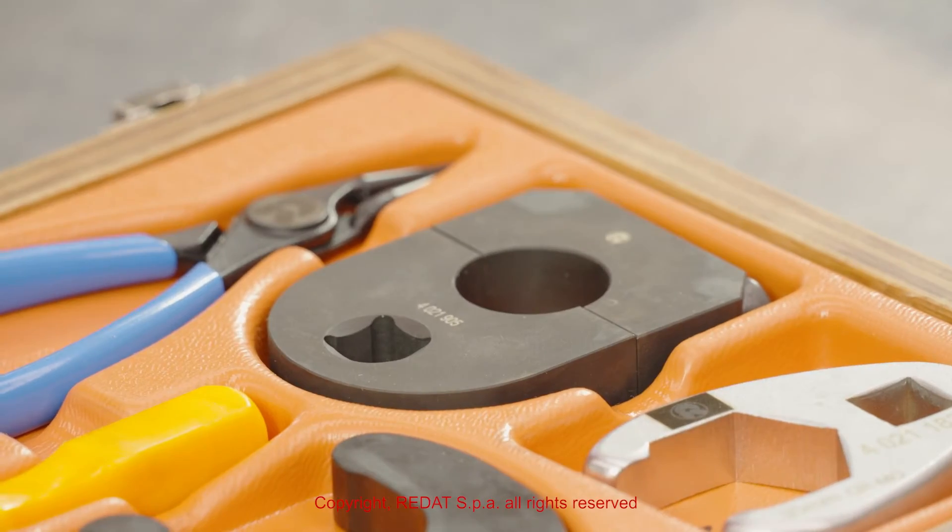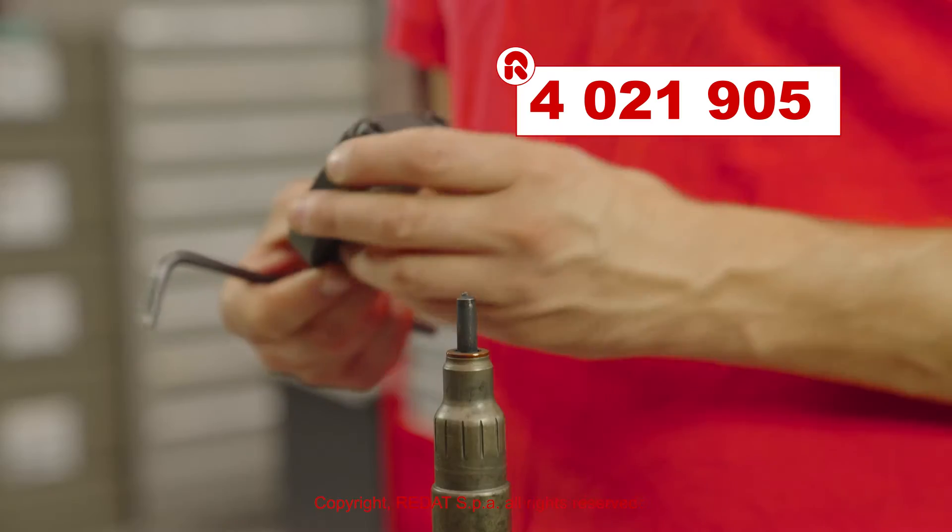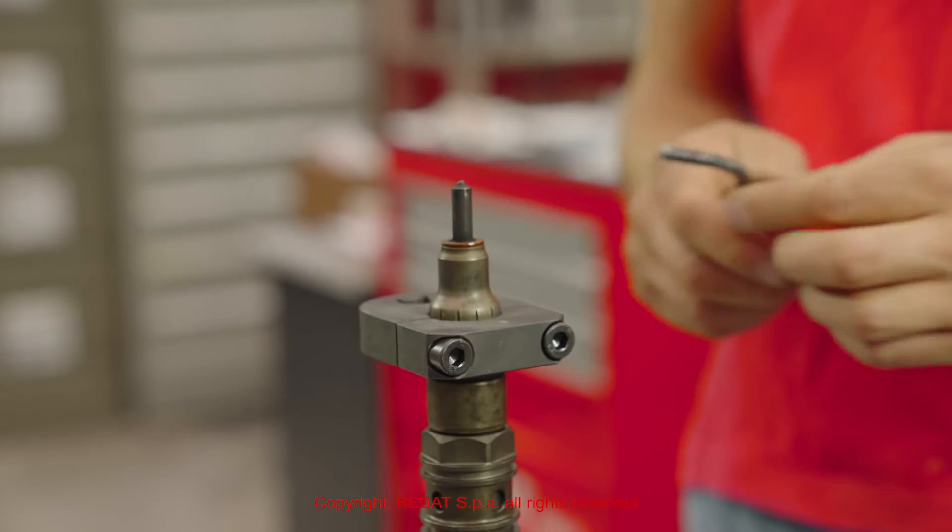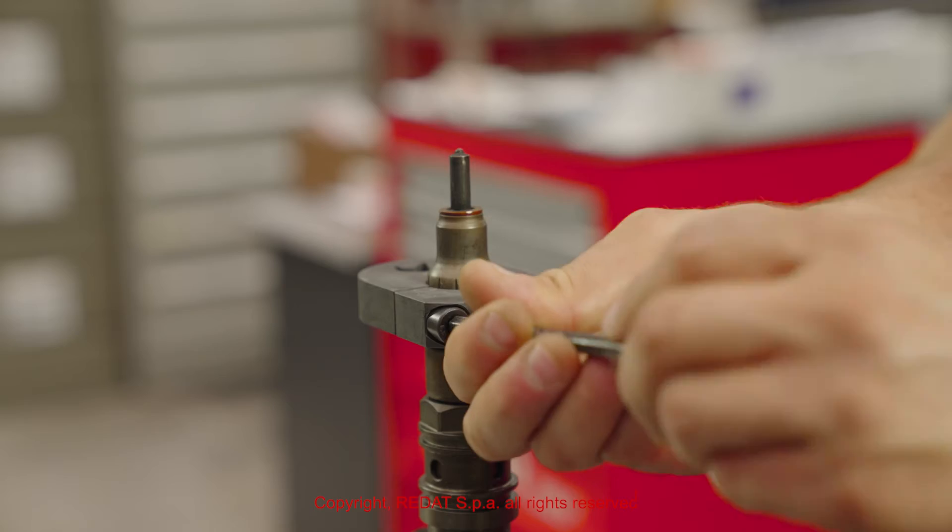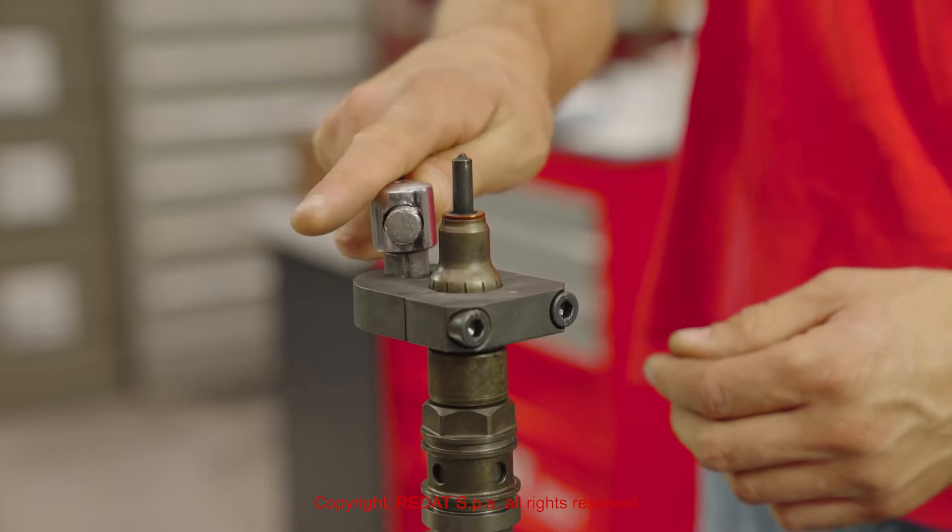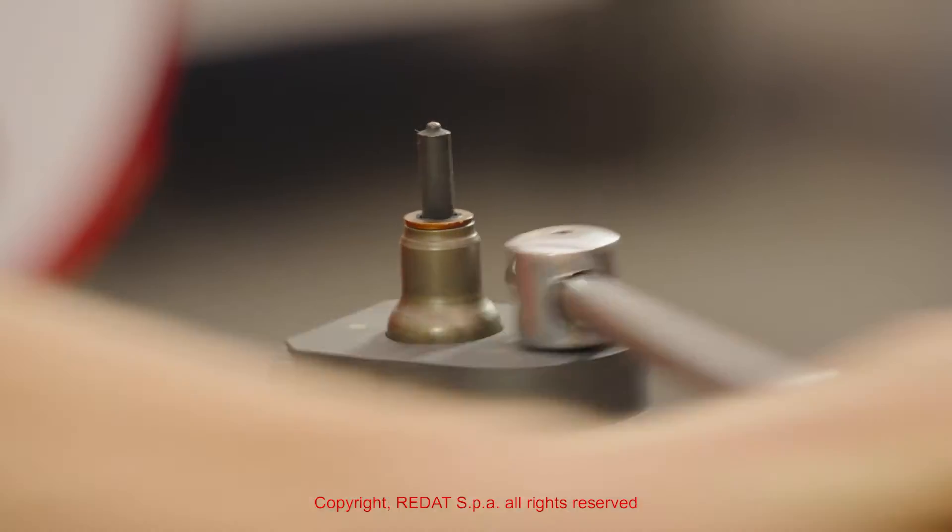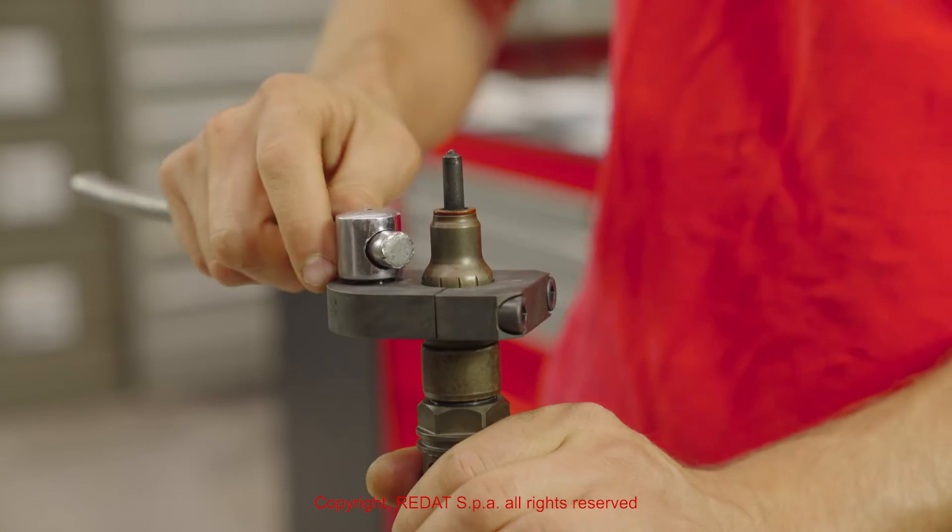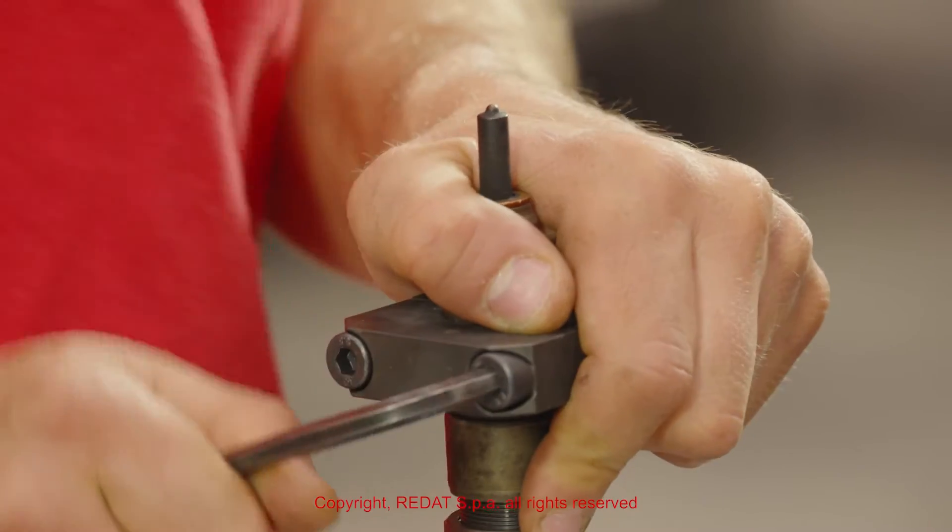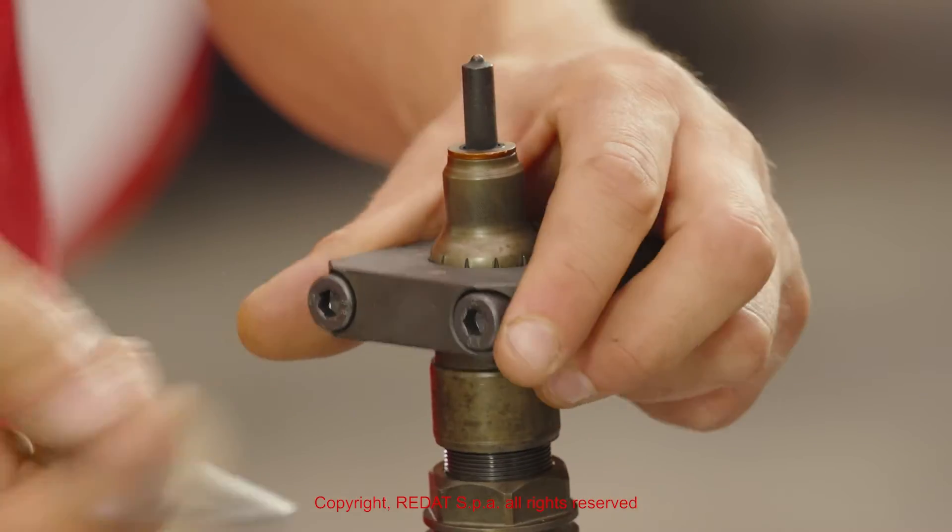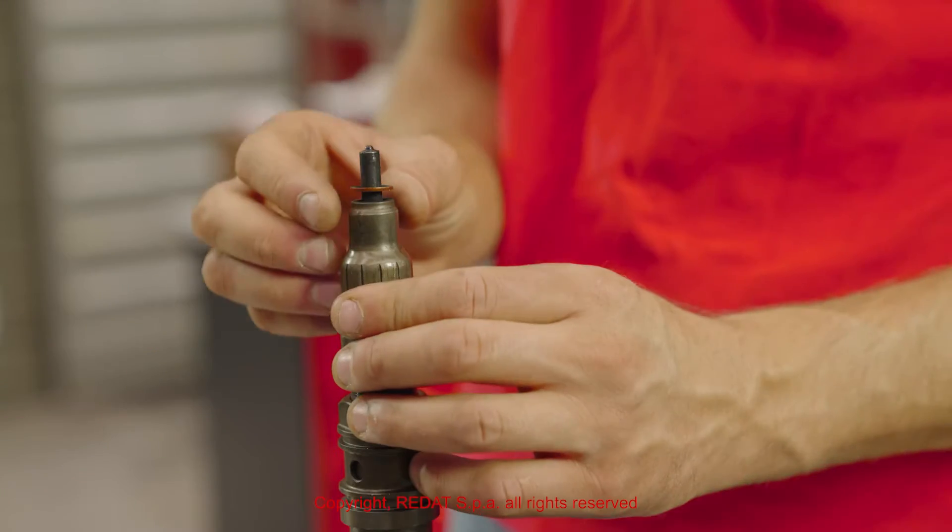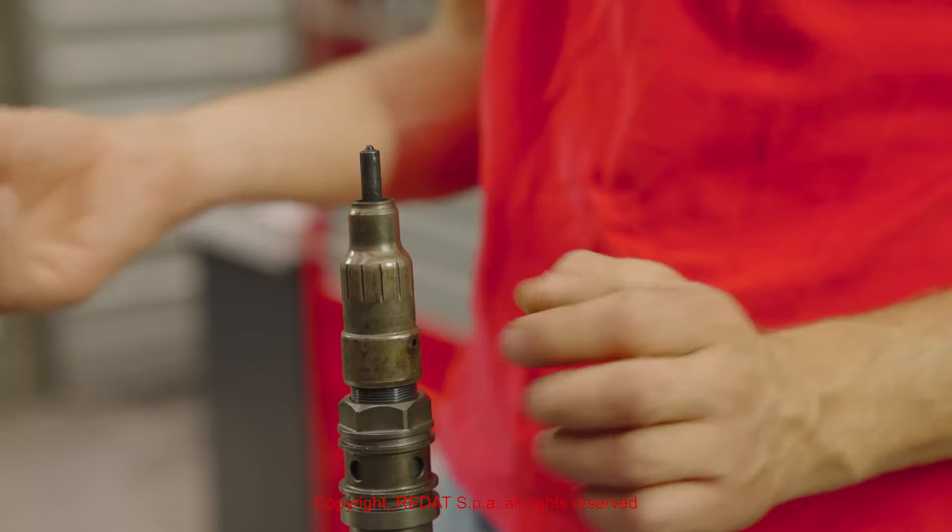We use the wrench 4 0 2 1 9 0 5 to remove the nozzle nut. Then we remove the other components.